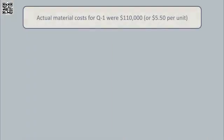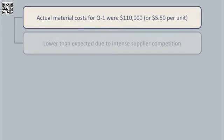We are then told that actual material cost for Q1 were $110,000 or $5.50 per unit. These were lower than expected due to competition being more intense than expected among Company A's material suppliers.